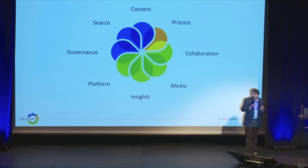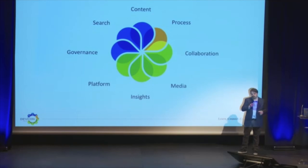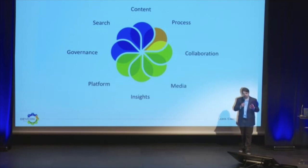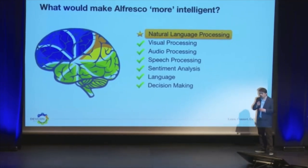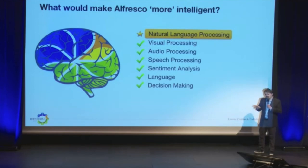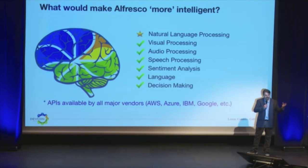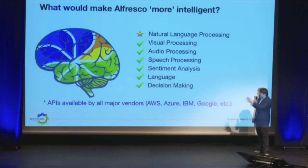So what about Alfresco? Alfresco has content and is really good at processes, governance, insights, etc. But if you want to take that and make it a little bit smarter, you take the cognitive services that are out there and merge them with Alfresco. I highlighted natural language processing because this is the root of everything. Think about Alexa or Google Home — how it takes text and puts it into context. All the major vendors support these services, but there are also niche players you can leverage.